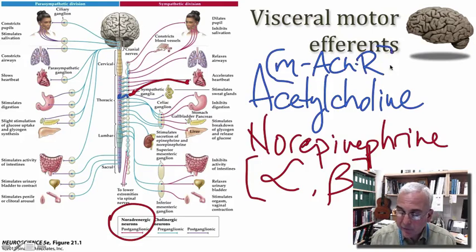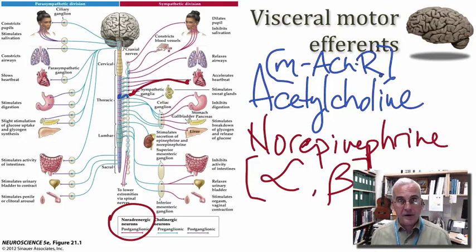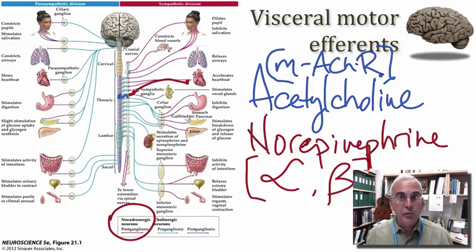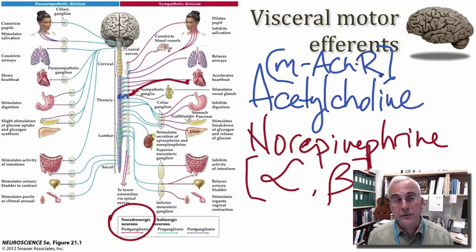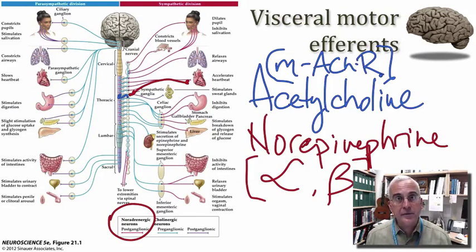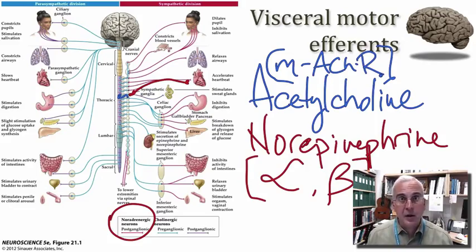All of these neurotransmitter receptors in our visceral motor system are of the G protein-coupled seven-transmembrane receptor family. These are the receptors that mediate a broad diversity of postsynaptic effects depending upon the second messenger systems activated by those G proteins. These effects tend to be a little slower to develop than with fast ionotropic receptors, but the diversity of effects can be quite remarkable and in some cases quite long-lasting.